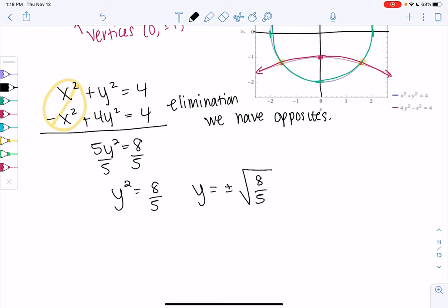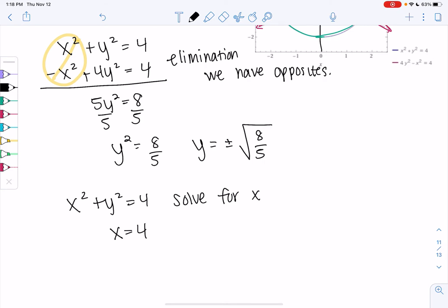We also know x squared plus y squared equals 4. Let's solve for x. So x equals 4 minus y squared. So 4 minus 8 fifths because y squared is 8 fifths.